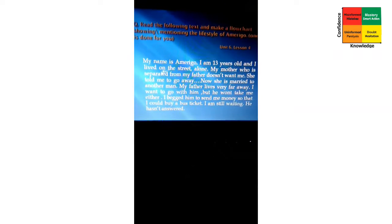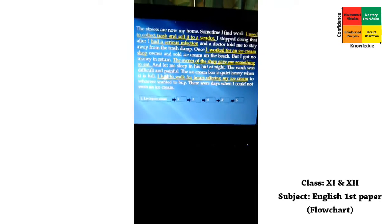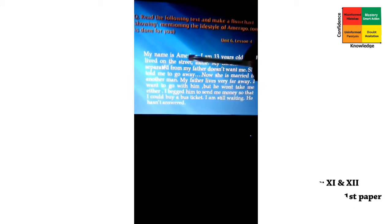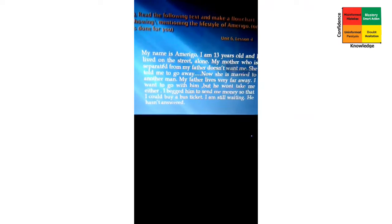I am not going to read the details of the text today because we have already read it in our previous classes. From the first paragraph we got information about Amerigo's family background, and in the next paragraph we get the lifestyle of Amerigo. I have already picked the answers — the sentences highlighted in yellow.